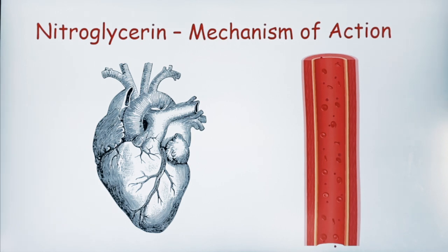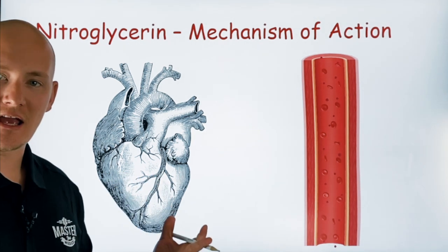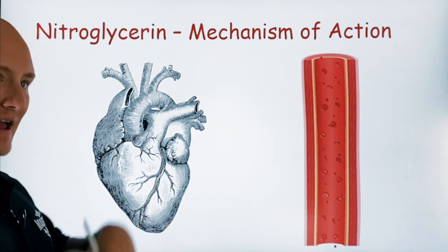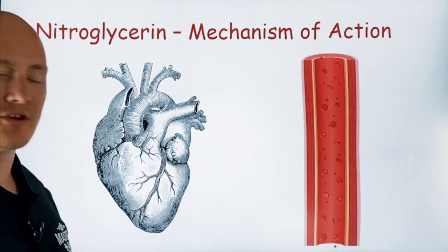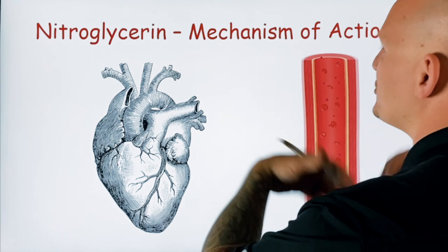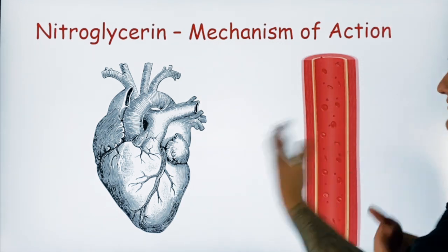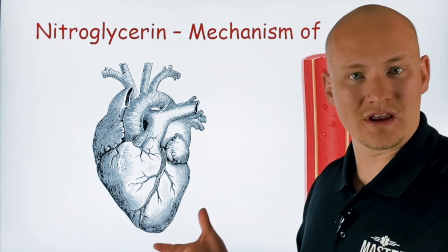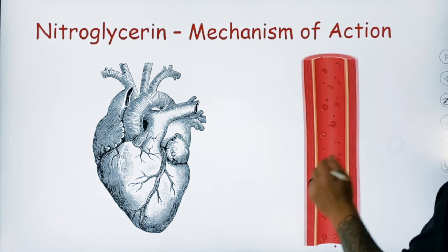Nitroglycerin may sound like a fairly simple medication, but it's still important to understand the mechanism of action because, yes, we know it dilates blood vessels — but why? How? What's it going to do? When you introduce nitroglycerin into the body, it converts a couple of times; the mitochondria actually have a role in its conversion, but it's going to convert into something called nitric oxide.